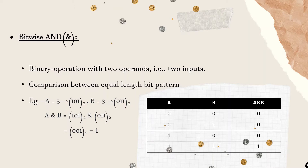For example, if A equals 5, which in binary is 101, and B equals 3, which in binary is 011, then the bitwise AND gives us: 1 AND 0 is 0, 0 AND 1 is 0, and 1 AND 1 is 1. So A AND B equals 001, which is 1.